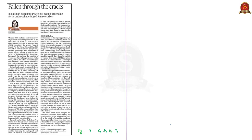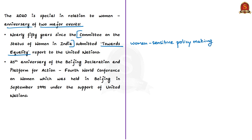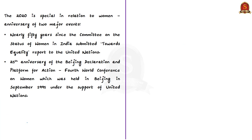The next op-ed article is about women labour force in India. The author considers 2020 special for women as it marks two major anniversaries: nearly 50 years since the Committee on the Status of Women in India submitted its report titled 'Towards Equality' to the United Nations, which focused on women-sensitive policymaking and gender equality; and the 25th anniversary of the Beijing Declaration and Platform for Action, adopted at the Fourth World Conference on Women held in Beijing in September 1995 under the United Nations, which also marked the UN's 50th founding anniversary.